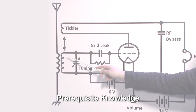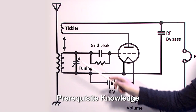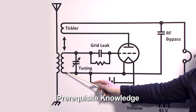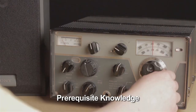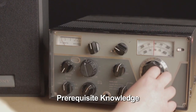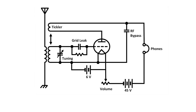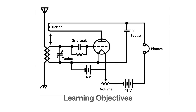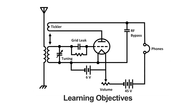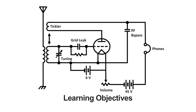Before watching this video you should be familiar with basic electrical circuits, and how inductors, capacitors, and AM radio transmitters work. After watching this video you will be able to explain how a basic radio receiver circuit functions to select particular radio frequencies.